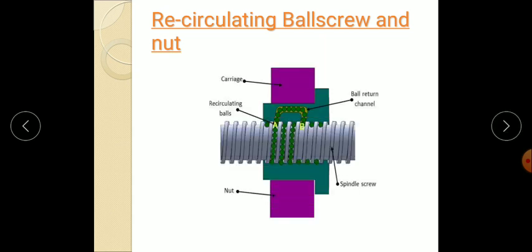Now next, we explain about the recirculating ball screw and nut. This is a figure related to the ball screw and nut. This is the carriage, this is the ball return channel, this spindle screw, the recirculating balls, and this is the nut.